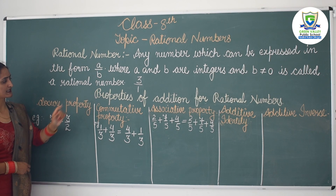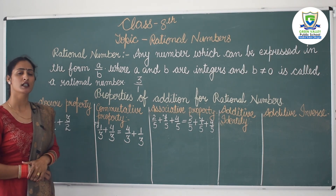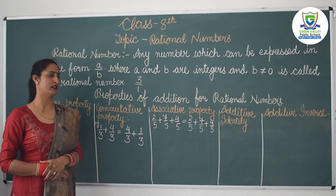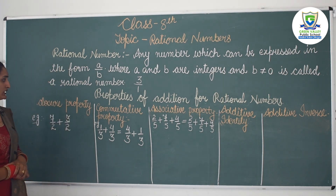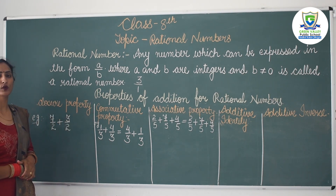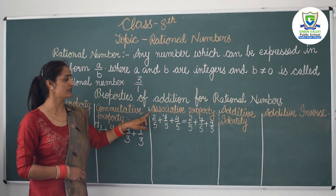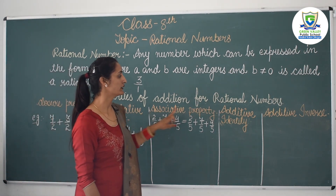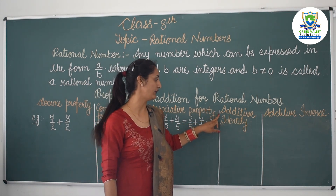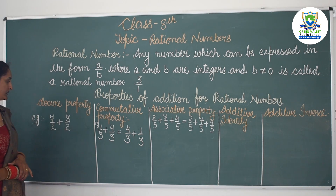The next topic is properties of addition for rational numbers. There are five properties of addition for rational numbers. The first property is known as the closure property. The second is commutative property, the third is associative property, the fourth is additive identity, and the last is additive inverse.